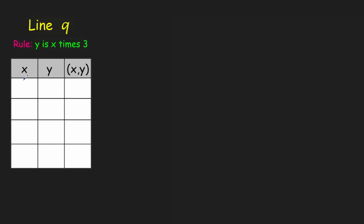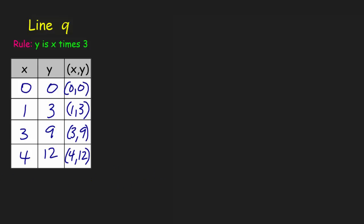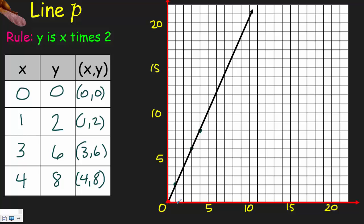I have (0, 0), (1, 2), (3, 6), and (4, 8) — that's going to be a steep line. Now let's create Line Q. Using the same x values of 0, 1, 3, and 4, the rule is y is x times 3. So y is 0 for x = 0, y is 3 for x = 1, then 3 times 3 is 9, and 4 times 3 is 12. Now let's plot those points: (0, 0), (1, 3), (3, 9), and (4, 12). That's going to be one interesting line.